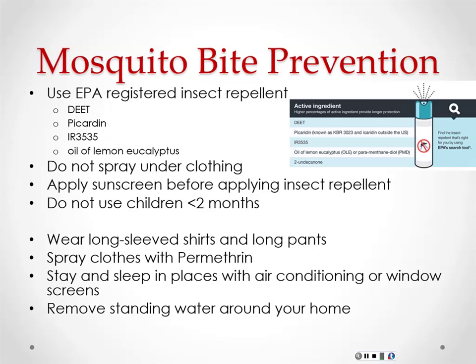What trimester were those 23 microcephaly cases identified in? Studies suggest contracting Zika earlier in pregnancy is worse — first trimester infections have worse outcomes than second or third trimester. But we don't know if there's any point after which it's safe. Initially warnings were only for the first trimester, but they've since been extended to all pregnant women.